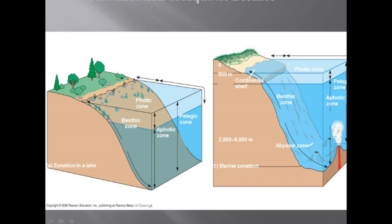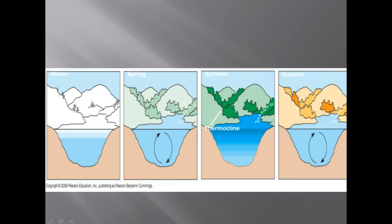In oceans and most lakes, a temperature boundary called the thermocline separates the warm upper layer from the cold deeper layer. Many lakes undergo a semi-annual mixing of their waters called turnover. Turnover mixes oxygenated water from the surface with the nutrient-rich water from the bottom, and it occurs most prominently in autumn and spring.